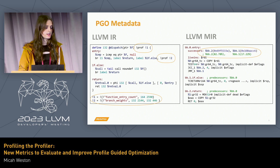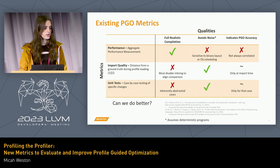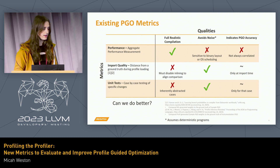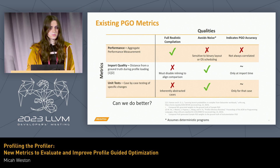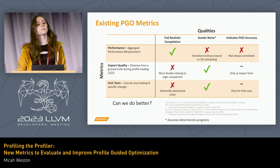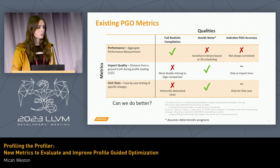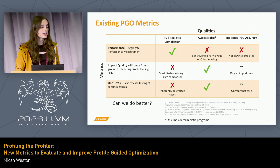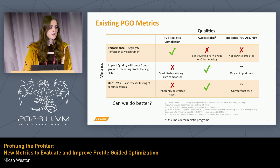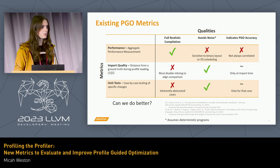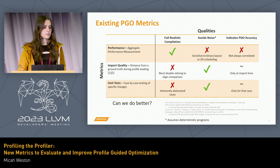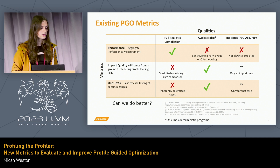So this is what we're trying to judge the accuracy of. What sort of existing metrics might we have? There's performance, which is pretty common on any benchmark — you'll be able to run it on really any compilation. However, there's potential for noise. Very small changes to PGO may lead to results being overshadowed by something like regular OS scheduling or even binary layout.